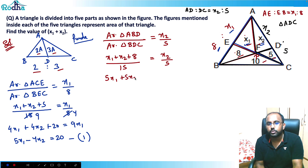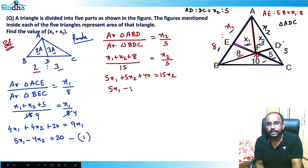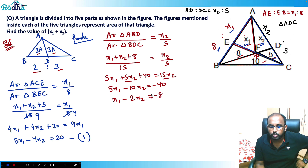Solving: 5x1 + 5x2 + 40 = 15x2, which gives 5x1 - 10x2 = -40, or simplified: x1 minus 2x2 equals minus 8. That's our second equation.